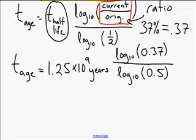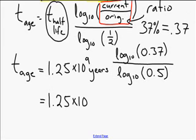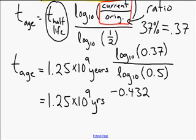Okay, I'm going to start out by calculating what these log values are. So I'm just going to rewrite this part. 1.25 times 10 to the 9 years, abbreviate that. And now it turns out that log of 0.37 is negative 0.432, and log of 0.5 is negative 0.301.